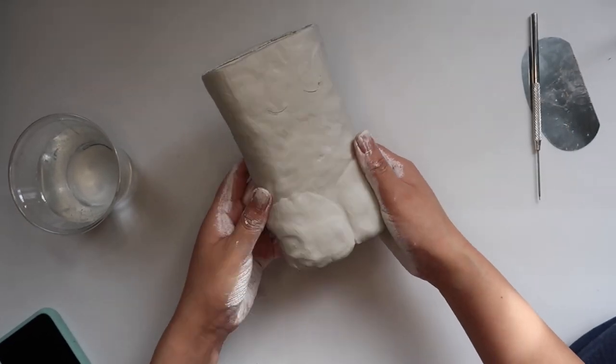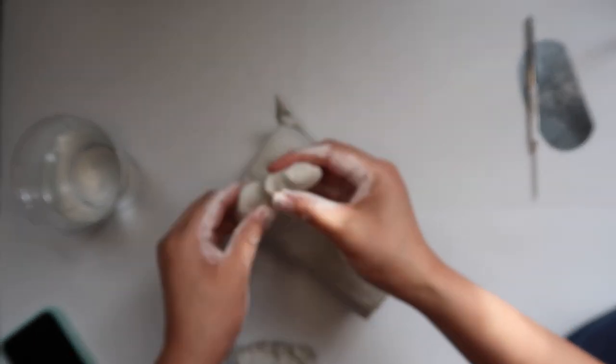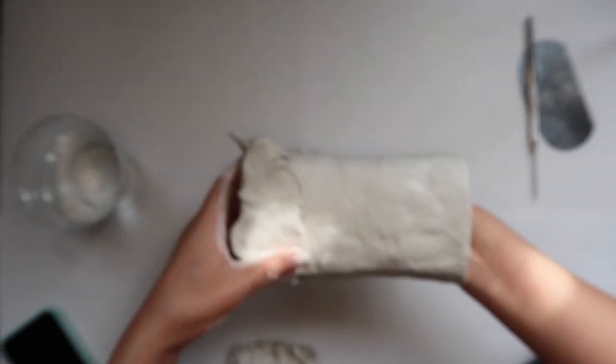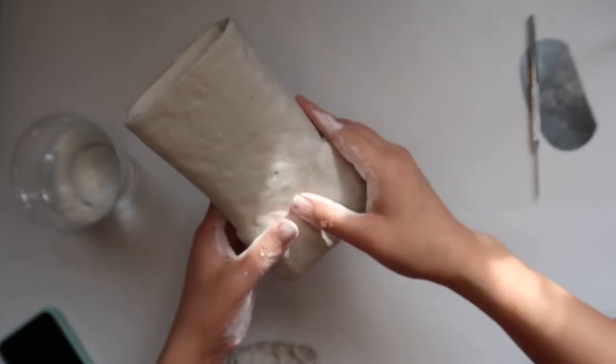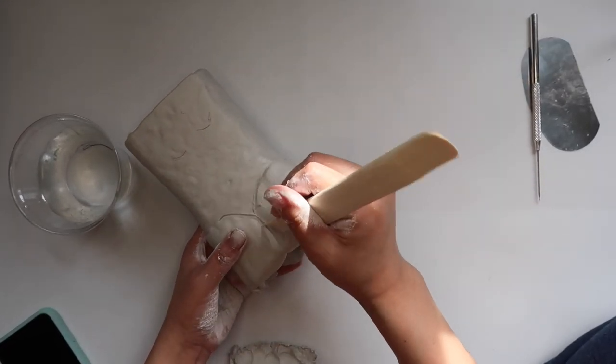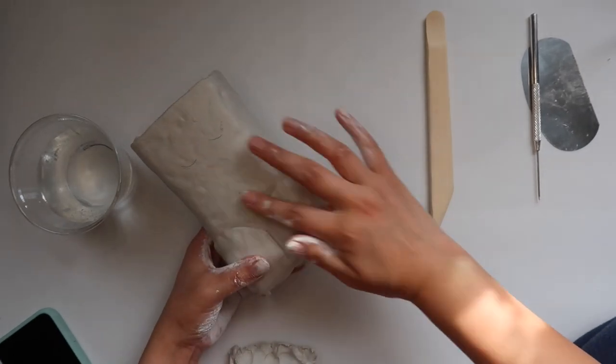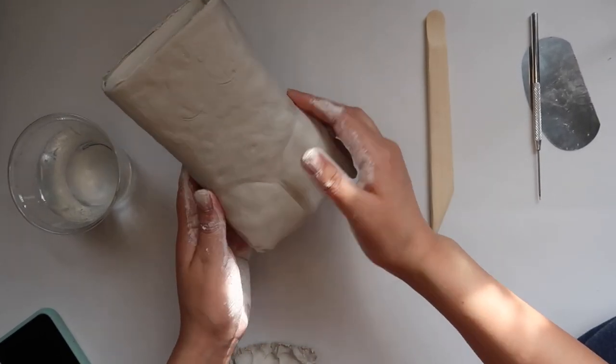I also added clay to her sides to give her some hips. And this part's a little bit blurry, or it is blurry, but I added a huge chunk of clay to the back to also make her a little bit thicker back there. But this still isn't her butt yet. Also, I know it's looking a little wonky right now, but the key to everything is gonna be blending and smoothing everything out.